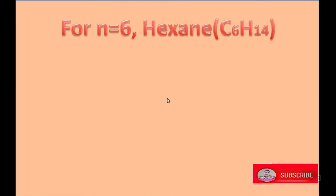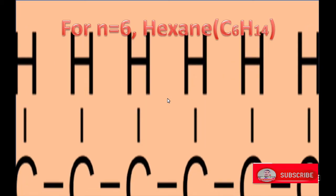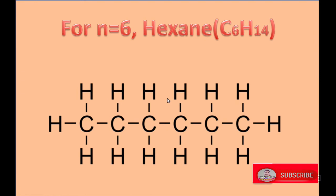For N equals 6, the alkane is called hexane. In hexane, 6 carbon atoms are bonded with each other and also with hydrogen atoms. Here, 14 hydrogen atoms surround the carbon atoms. Each carbon atom can form only 4 bonds due to the tetravalency of carbon.